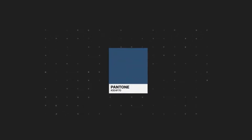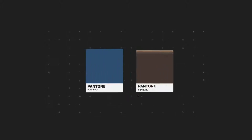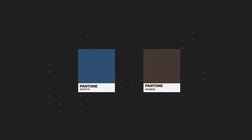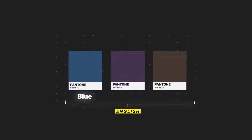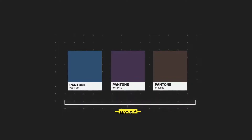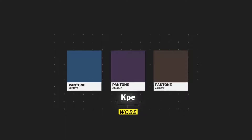If I showed you this paint chip and asked you to tell me what color it is, what would you say? How about this one? And this one? You probably said blue, purple, and brown — but if your native language is Wobbe from Côte d'Ivoire, you probably would have used one word for all three.